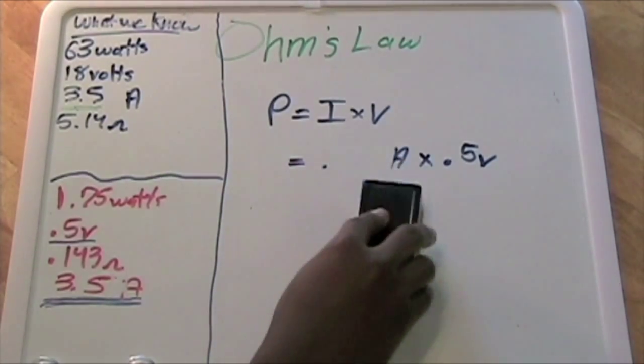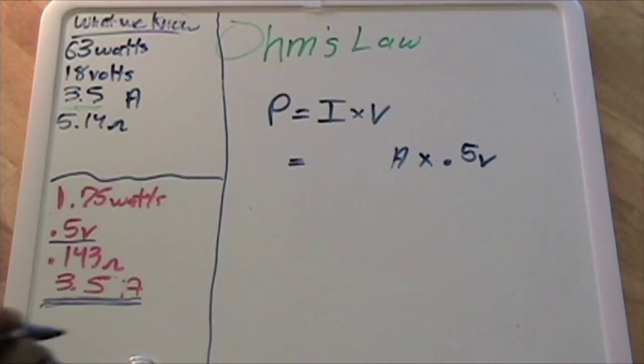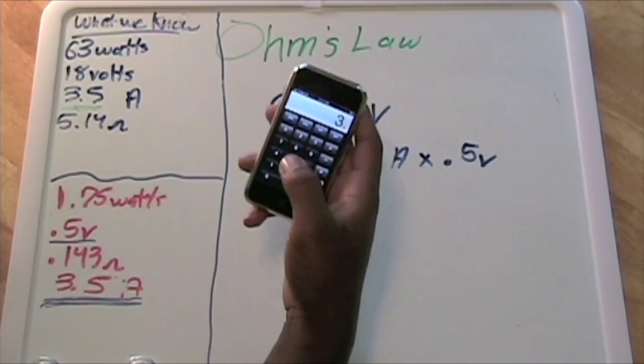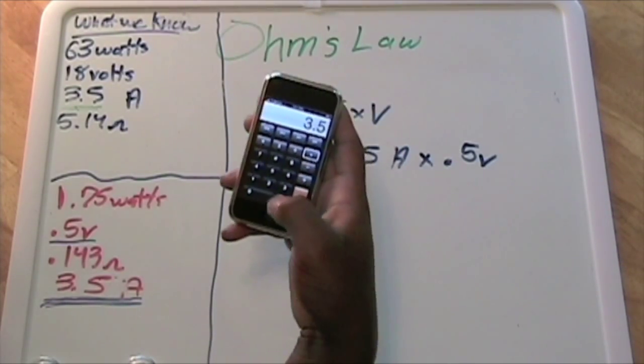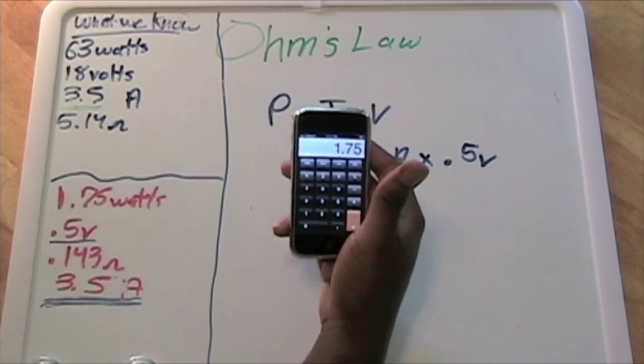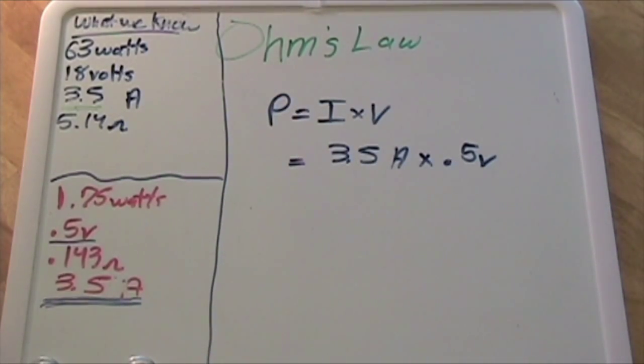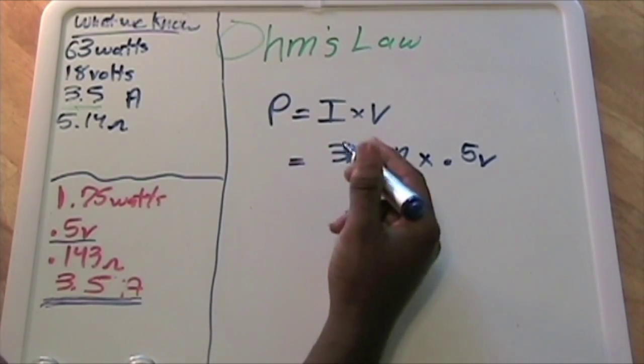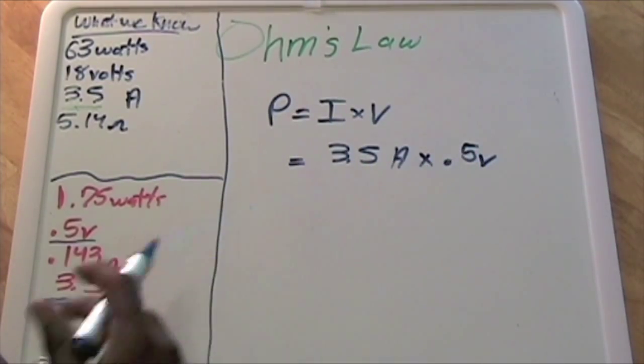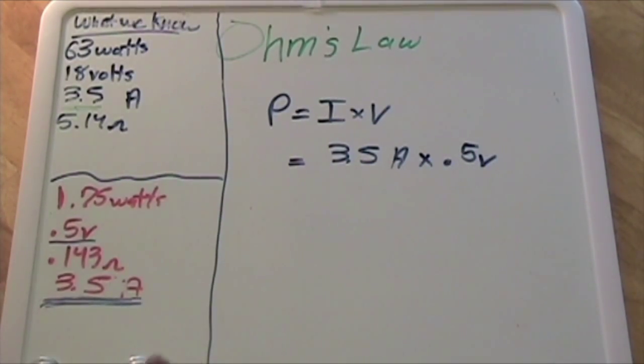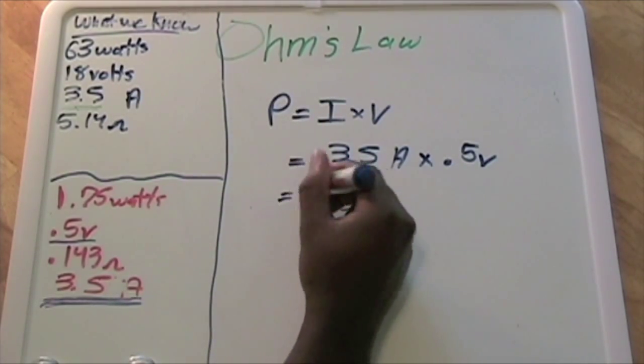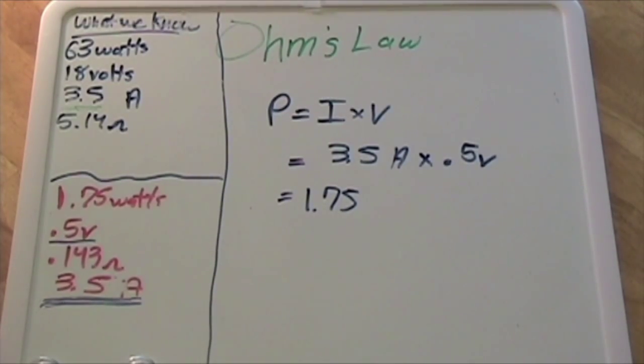Let's change this value to 3.5 amps and see what happens. 3.5 times 0.5 equals 1.75, which checks out. That just confirms that since we are hooking these up in series, the current would be 3.5 amps for each solar cell. If you don't believe me, I'm going to actually use a real solar cell to show you that this does work out—that each solar cell does produce 3.5 amps.